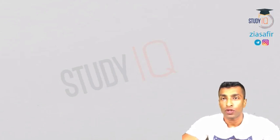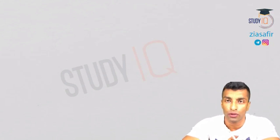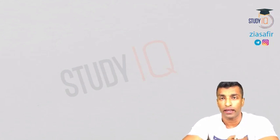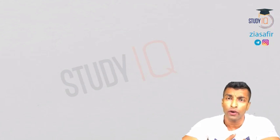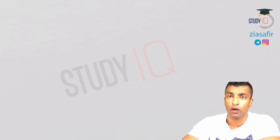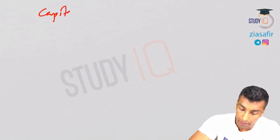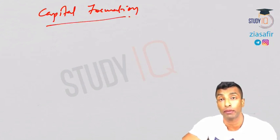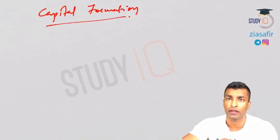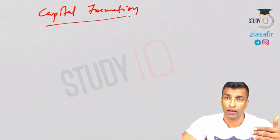Hello everyone, welcome to Study IQ. We will continue our discussion on economy. In the last session we talked about determinants of economic development. We are in the module 'Growth and Economic Development' and have covered important concepts, including all the important indices published by UNDP along with their Human Development Report. We discussed five indices published along with it, and some other indices as well. Today we'll discuss capital formation, which we left out in the previous discussion.